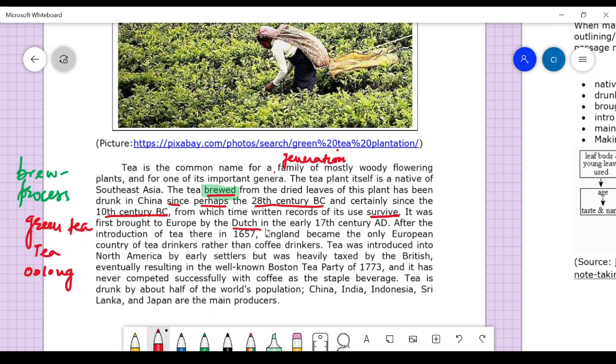It was first brought to Europe by the Dutch in the early 17th century. After the introduction of tea in 1657, England became the only European country of tea drinkers rather than coffee drinkers. Tea was introduced into North America by early settlers but was heavily taxed by the British, eventually resulting in the well-known Boston Tea Party.